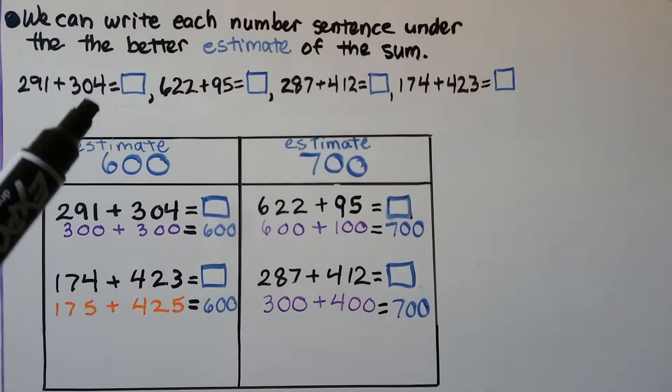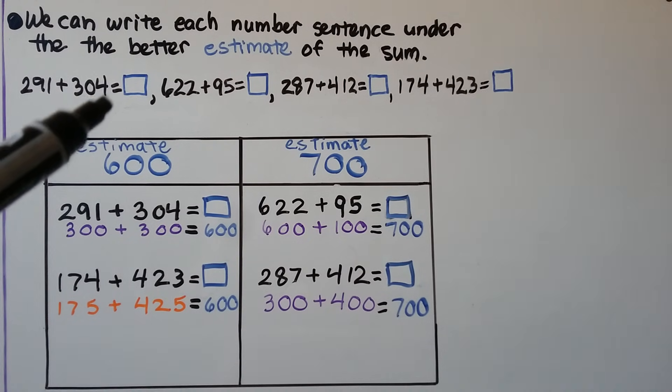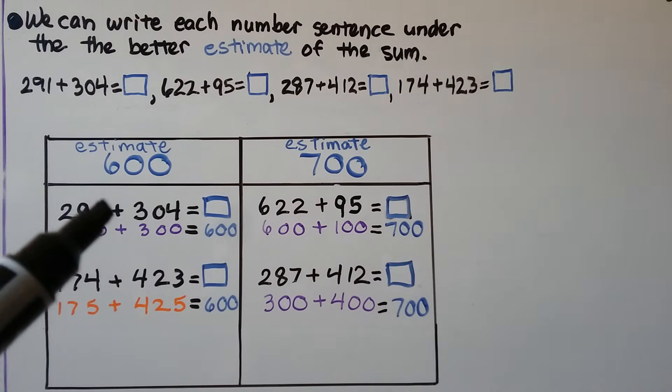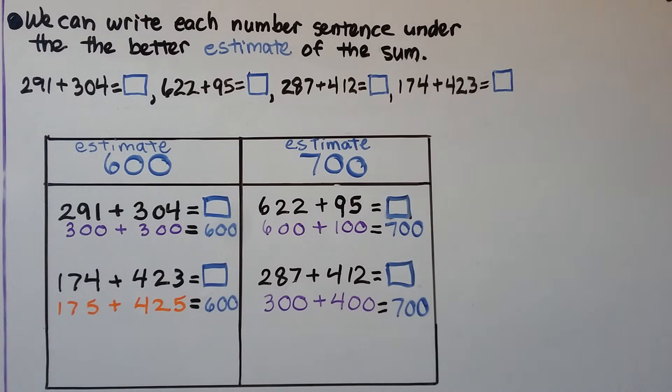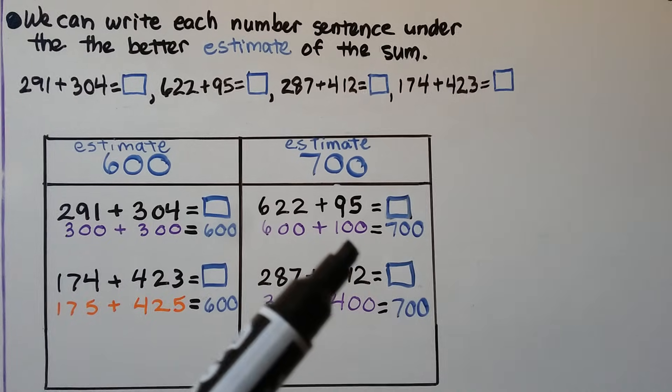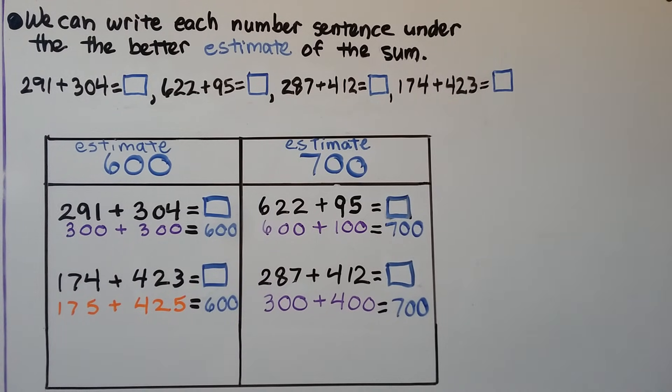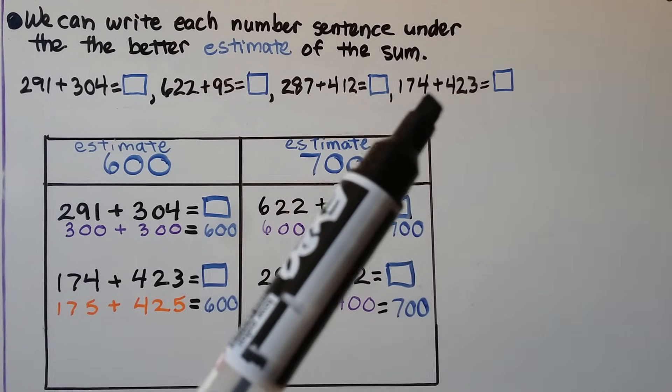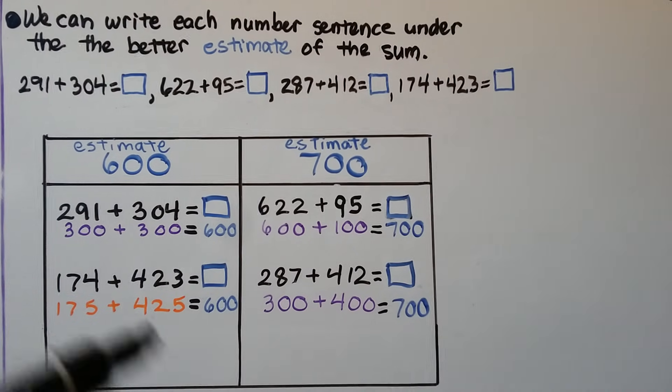We can write each number sentence, each of these number sentences, under the better estimate of the sum. We have 291 plus 304 is equal to an estimate. We can put it here under 600 because 291 is almost 300. 304 is almost 300. And that would be 600. So we put it under the 600 for the best estimate. 622 plus 95, we can round that to 600 plus 100. That would be about 700. So it would be best under this column for an estimate of 700. 287 plus 412, we can round that to 300 plus 400. That's about 700. And 174 plus 423, we can use compatible numbers and say it's about 175 plus 425. That's about 600. So we just took each one and put it under the best estimate.